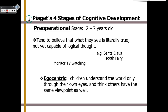During this stage, kids just believe whatever you tell them. If you've ever had a younger sibling, you know the power of this — you can tell them they were adopted and they'll burst into tears, or tell them there's a monster under their bed and they'll believe it every single time. One of the things that children during this stage learn is egocentrism — children understand the world only through their own eyes and think others have the same viewpoint as well.